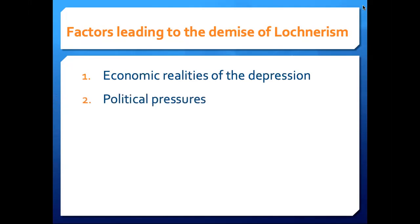We also had the court suffering from what had to have been deep political pressures. There was pressure from the public — virtually everyone was being quite personally affected by the court's decisions. And there was also pressure from the political branches, mostly from FDR and his threatened court-packing plan.